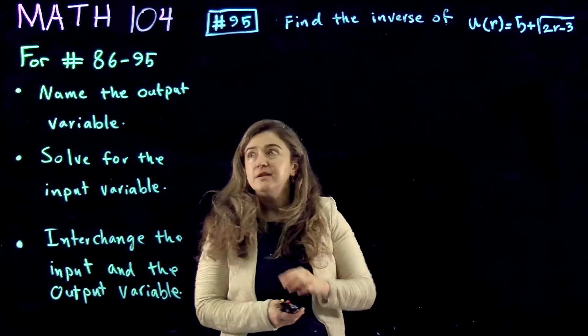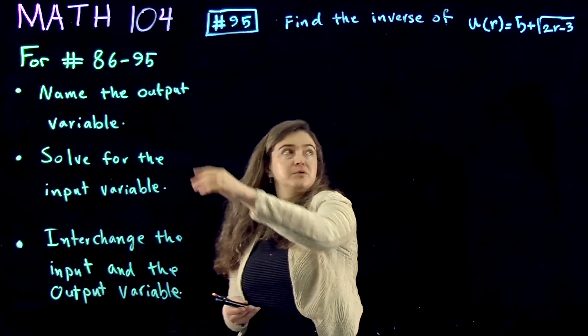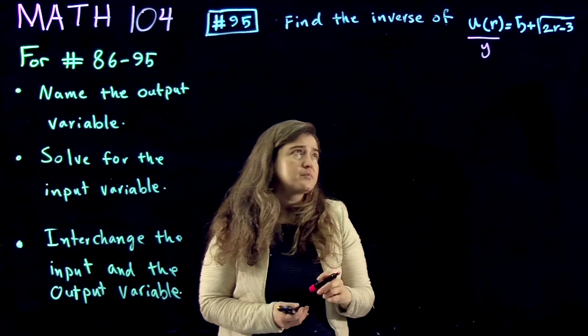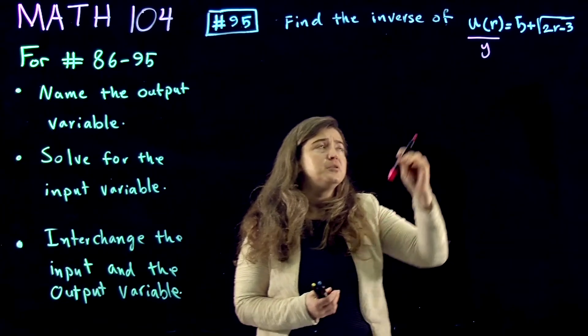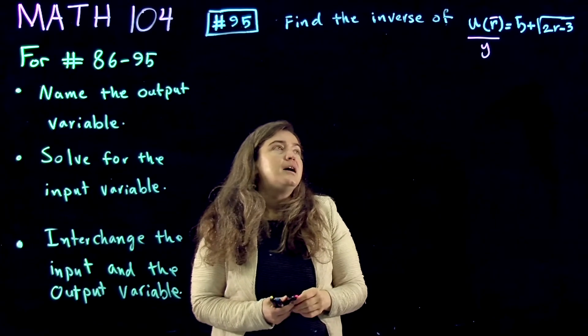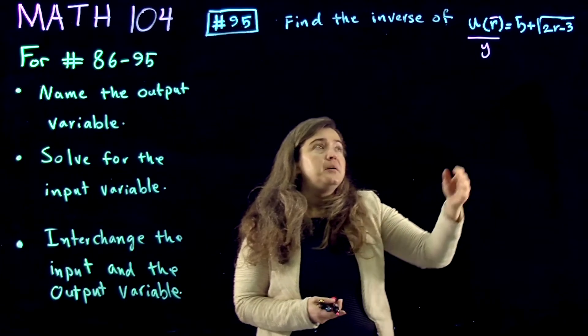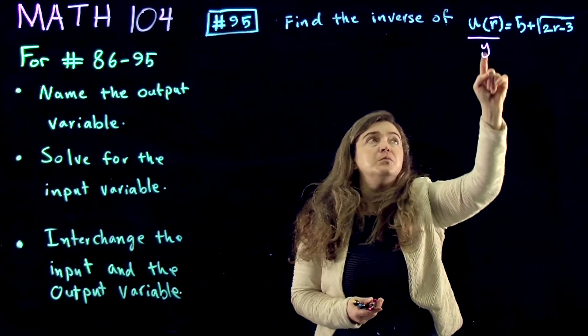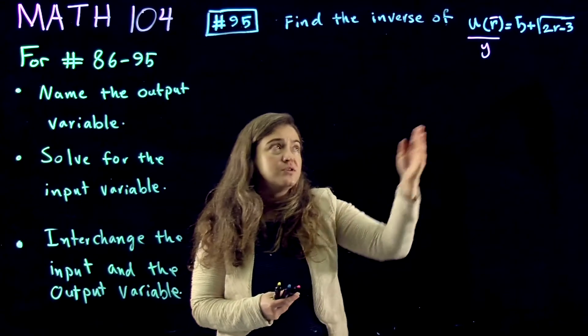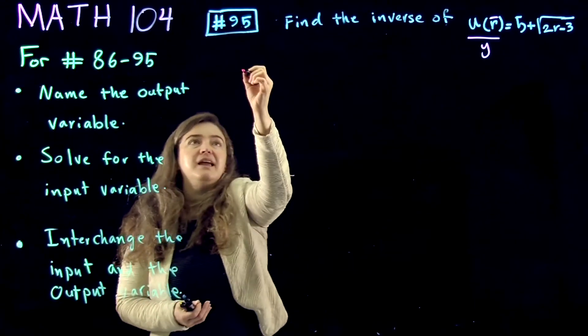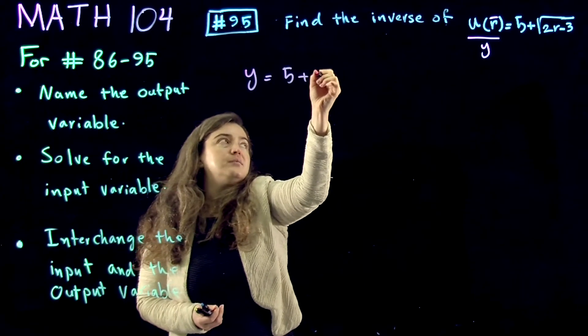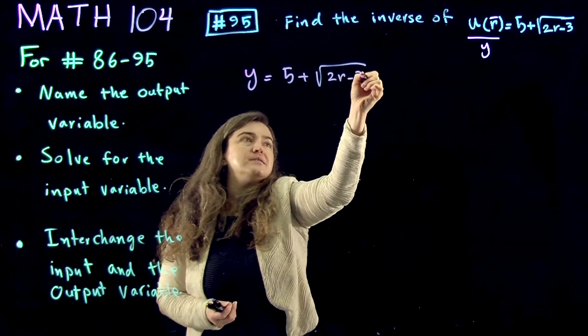The first step is name the output variable. So I'm going to name the output variable y, and then find the input variable, which is inside of u of r, is r. And then rewrite this entire thing. First of all, y and r, they're not the same thing, so choice of the name y is okay. And then I write y is equal to 5 plus square root of 2r minus 3.